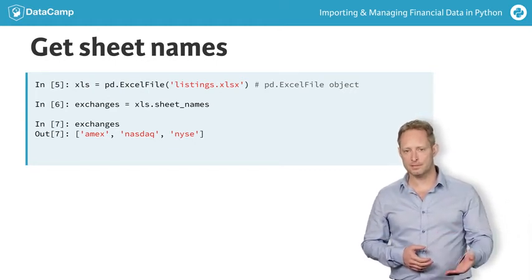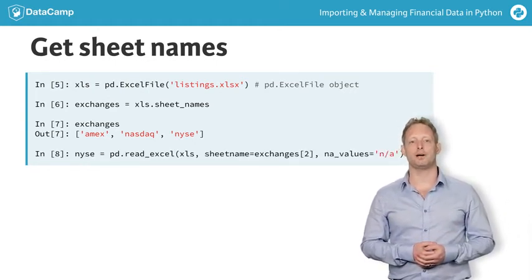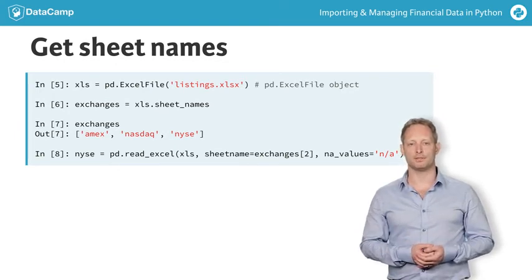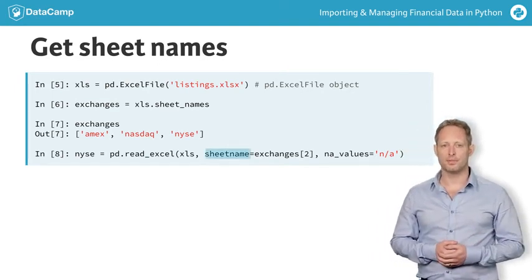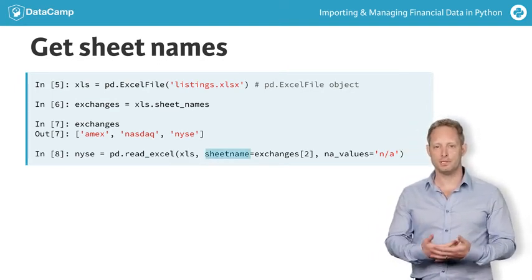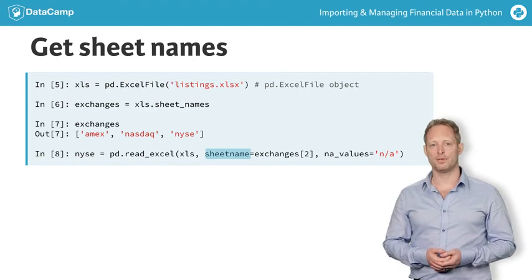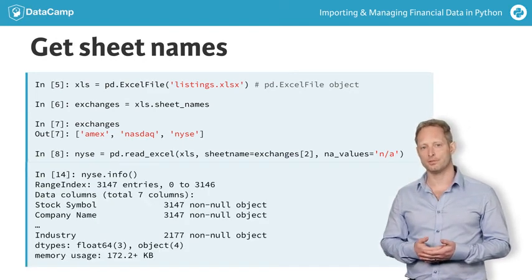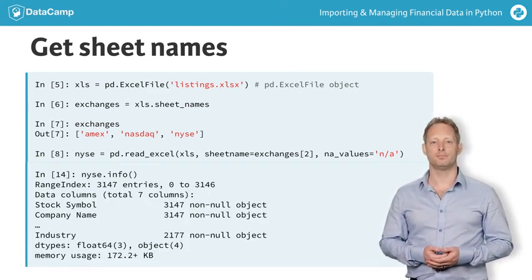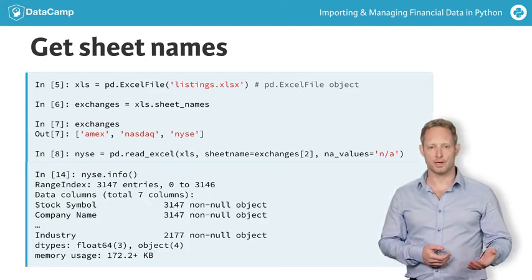In the next step, you can pass the Excel file object to read_excel to import its content, instead of the path to the file. You can then select the name of the target worksheet from the list stored in the exchanges variable. Assign the resulting data frame to the variable nyse and call the .info method on this data frame to show the expected output.